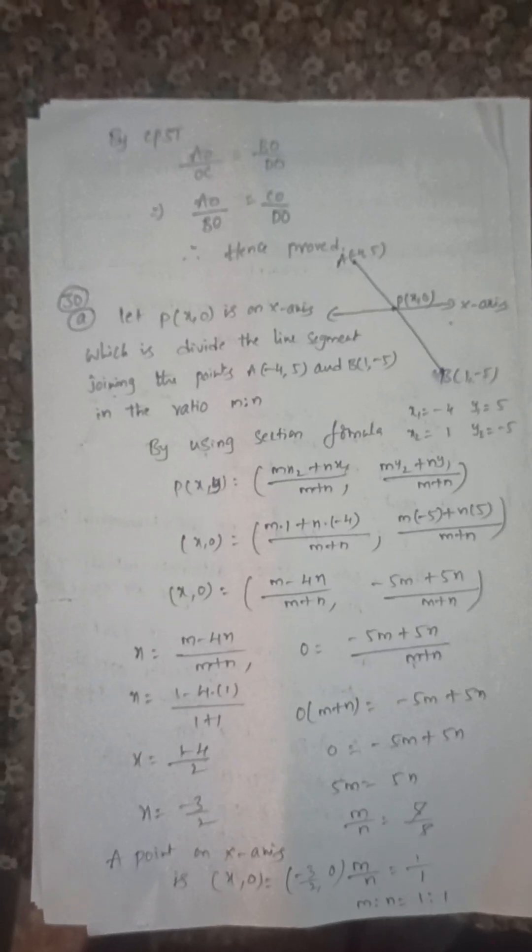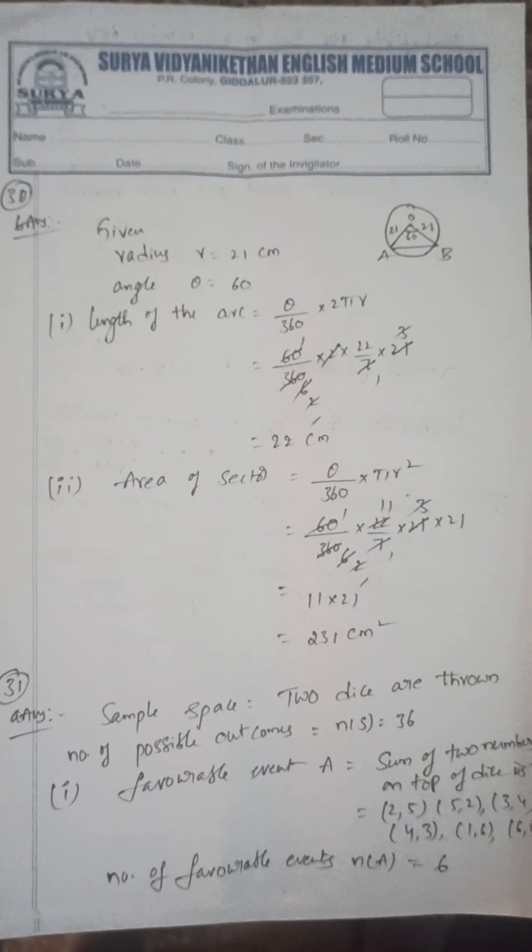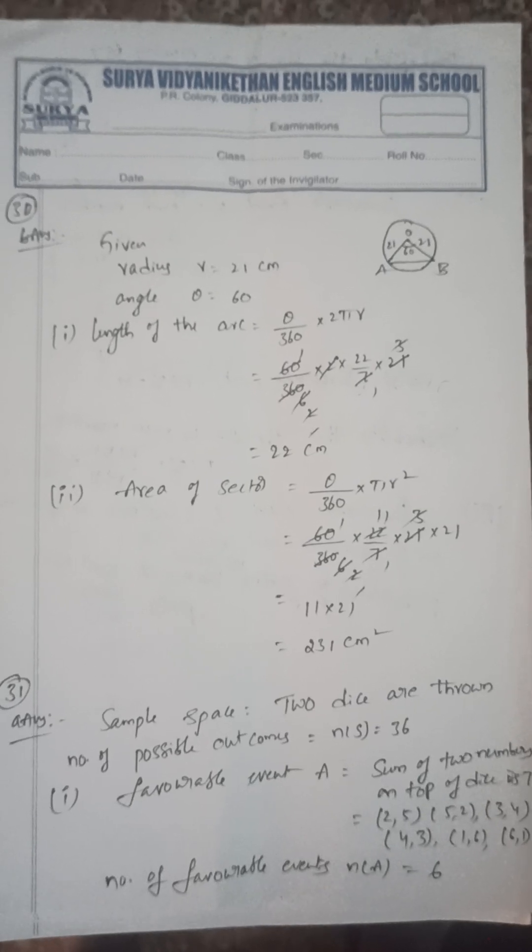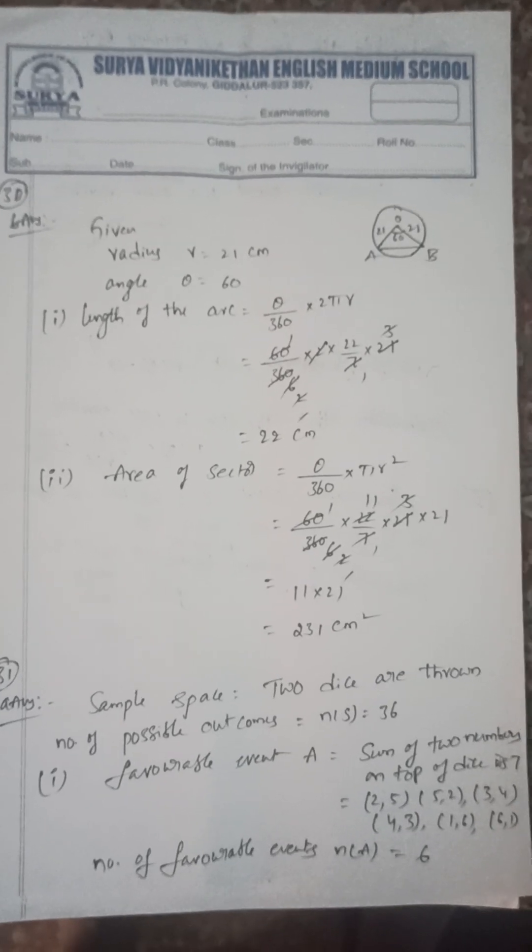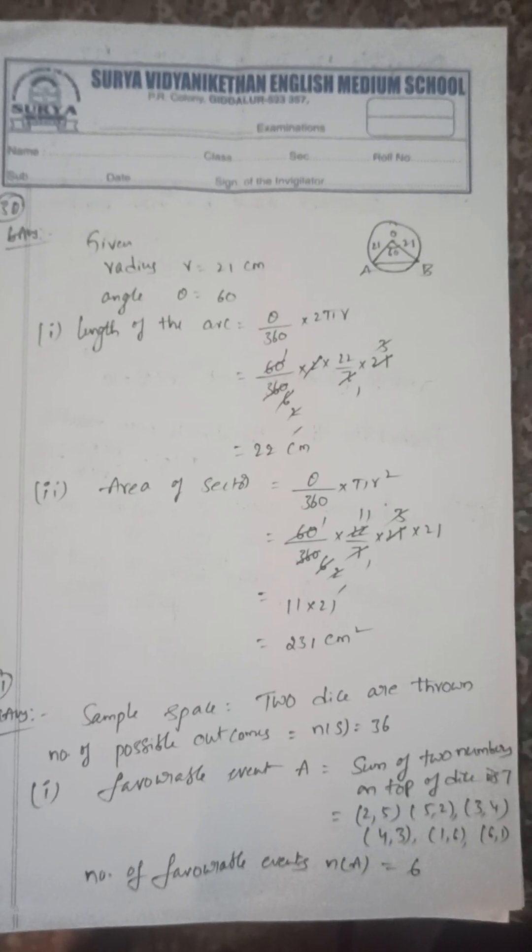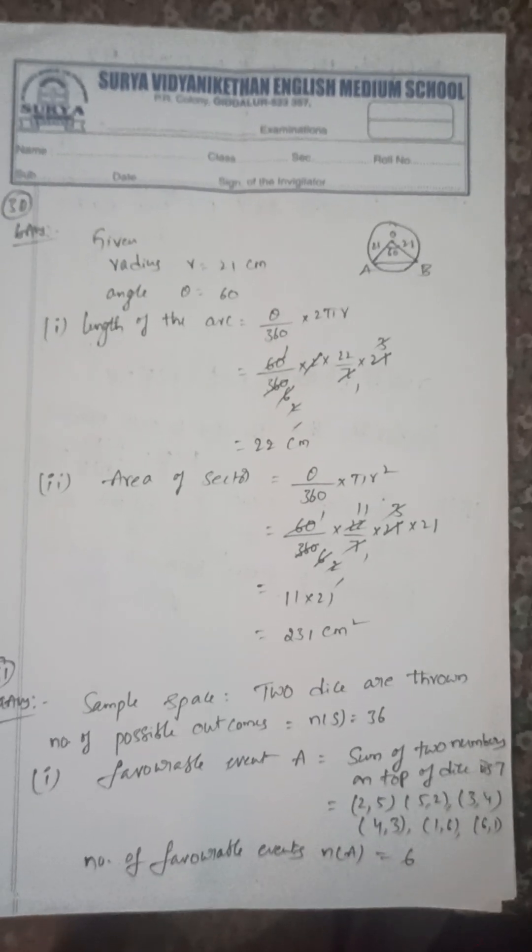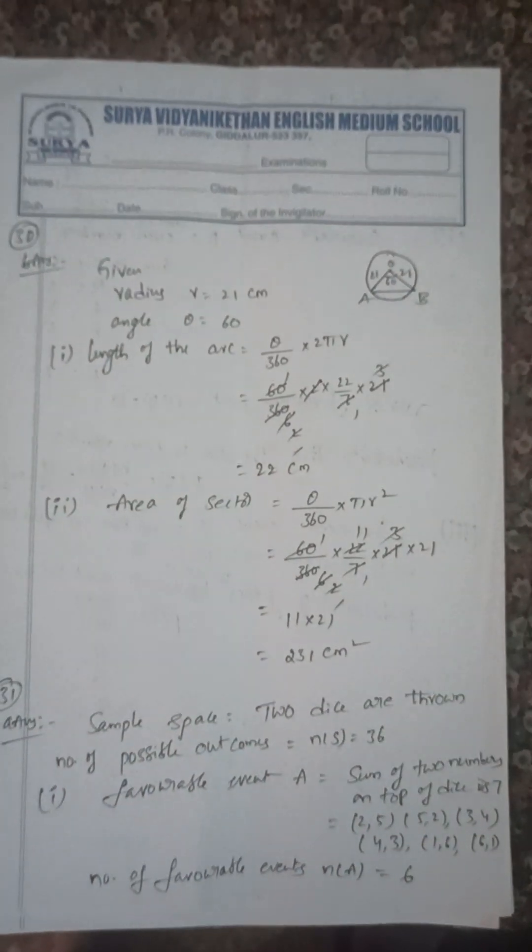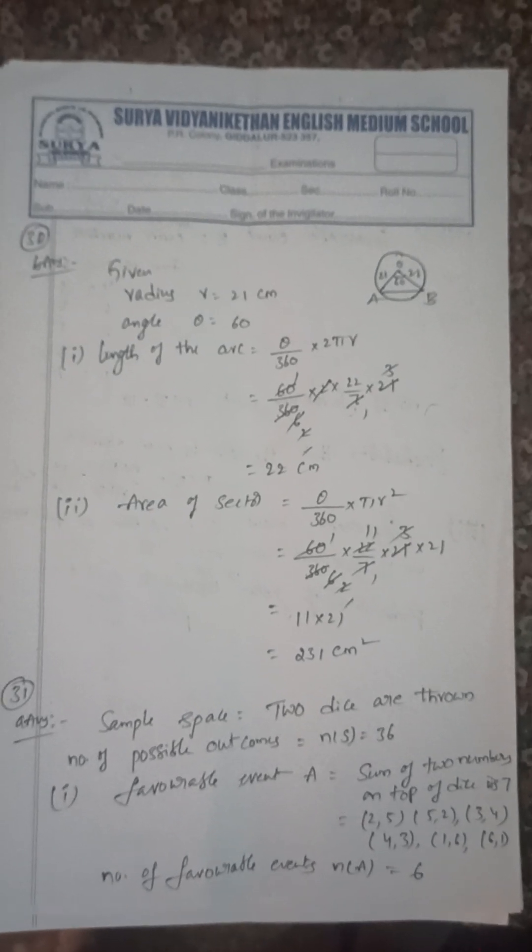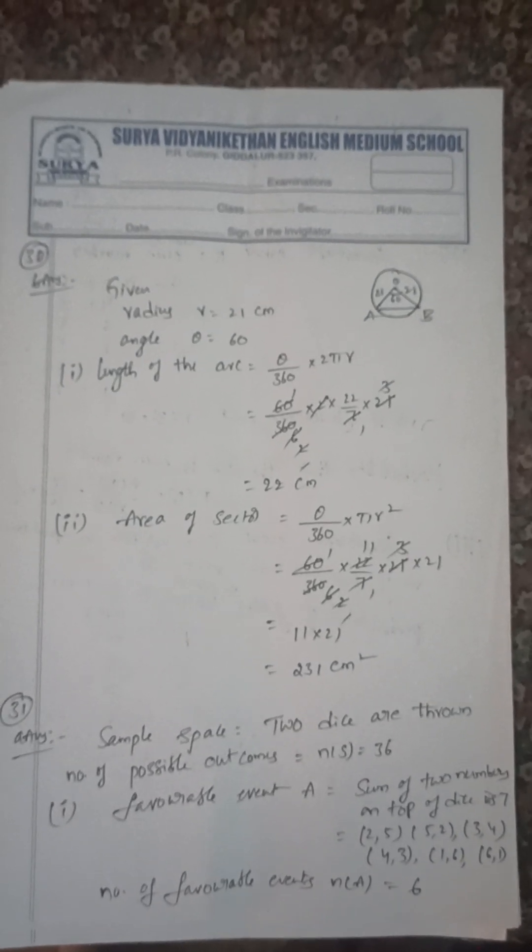Next, 30B: area of sector, length of the arc. Next, 31A: probability—two dice are thrown. Sum of two numbers on the top of the dice is 7. That is, how many chances? Six. So what's the probability? 6/36.